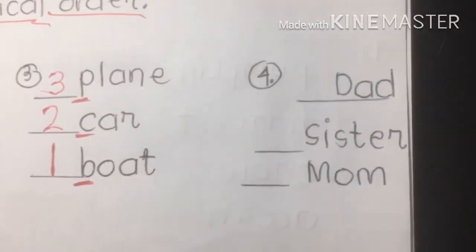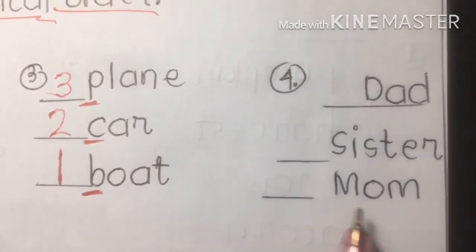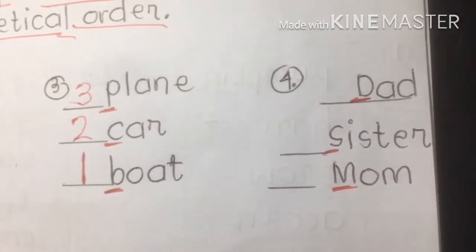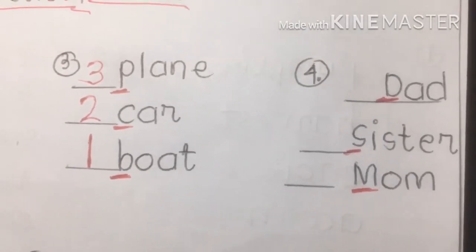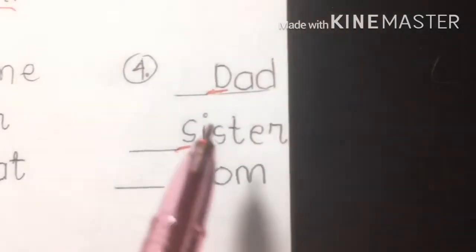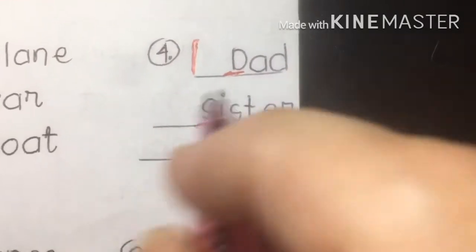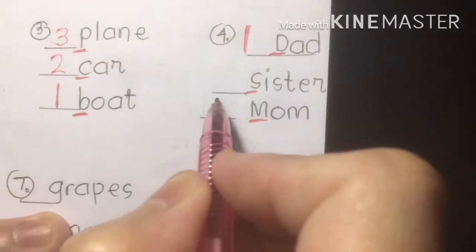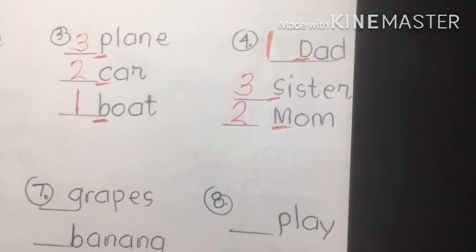Number four: dad, sister, mom. Underline the first or initial letter of each word. The first letter D — dad — is number one. Next is M for mom, which is second. And the third is sister. So the order is: dad, mom, sister.